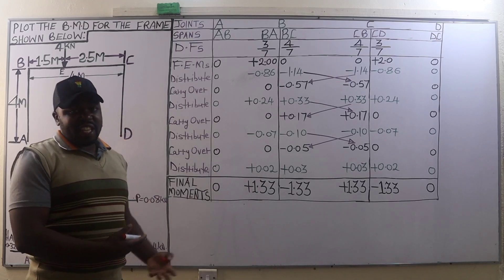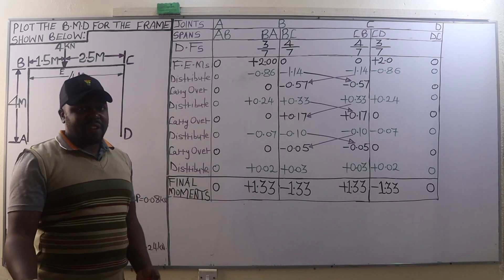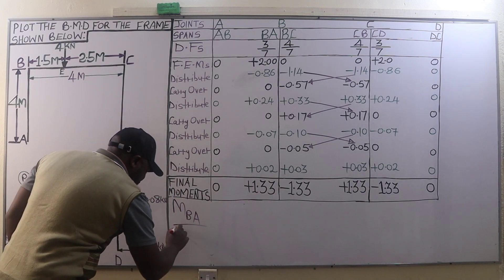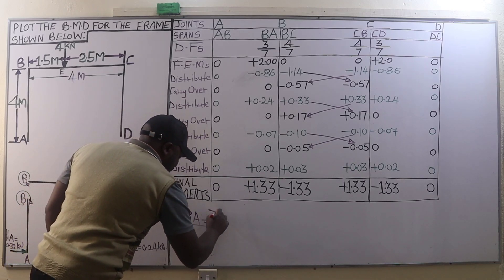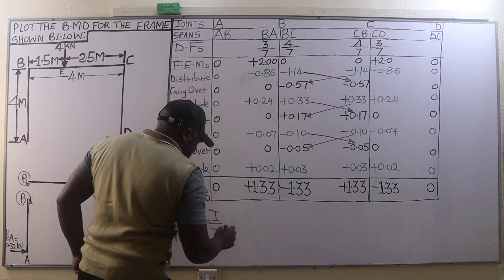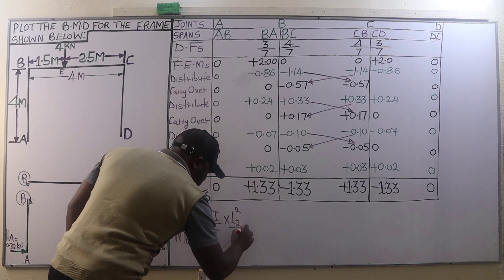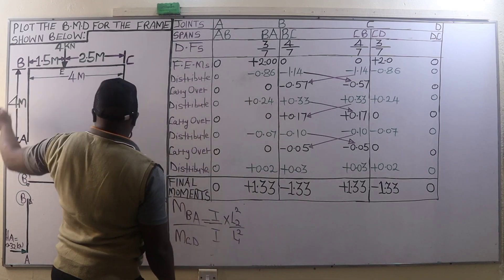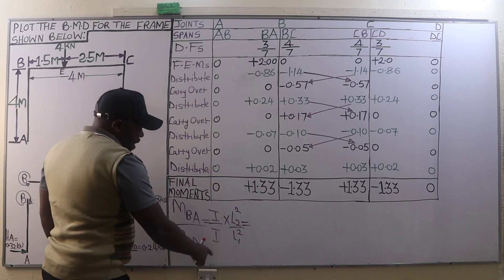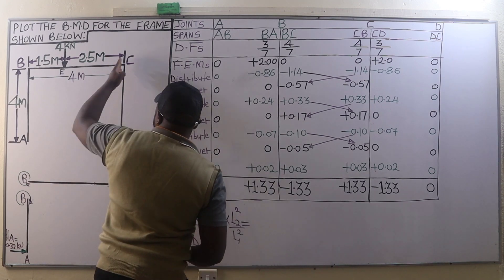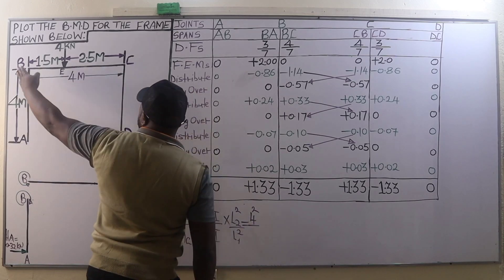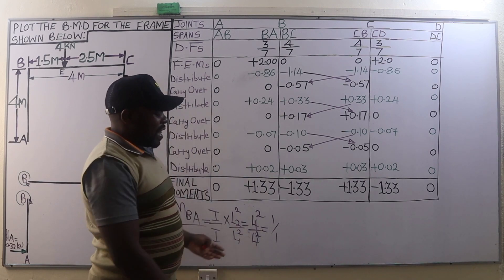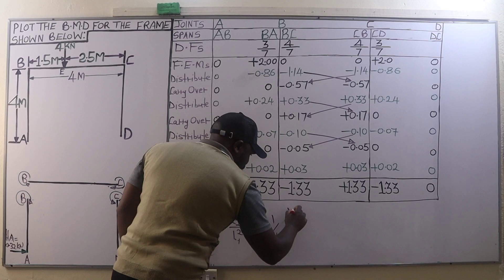When introducing unsymmetrical portal frames, we say that the bending moment on member BA divided by the bending moment on member CD is given by the formula: I/I multiplied by L2² over L1², where L2 is the length of column CD and L1 is the length of column BA. Since I and I cancel out, we have L2² over L1². CD is 4 meters so 4² divided by BA which is also 4 meters giving 4², and this gives us 1 over 1.